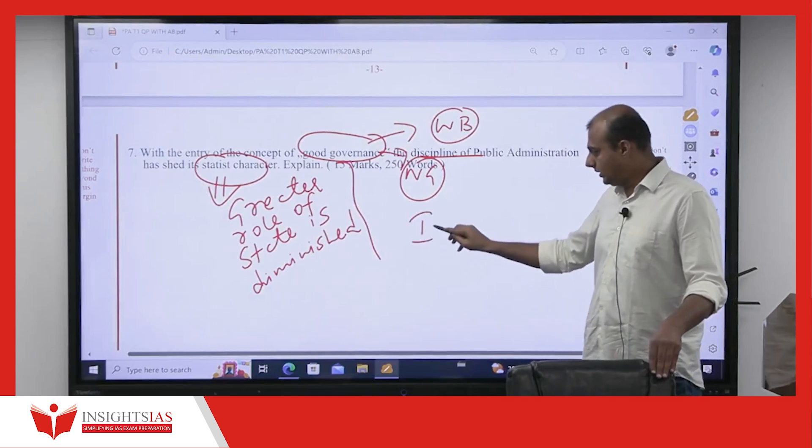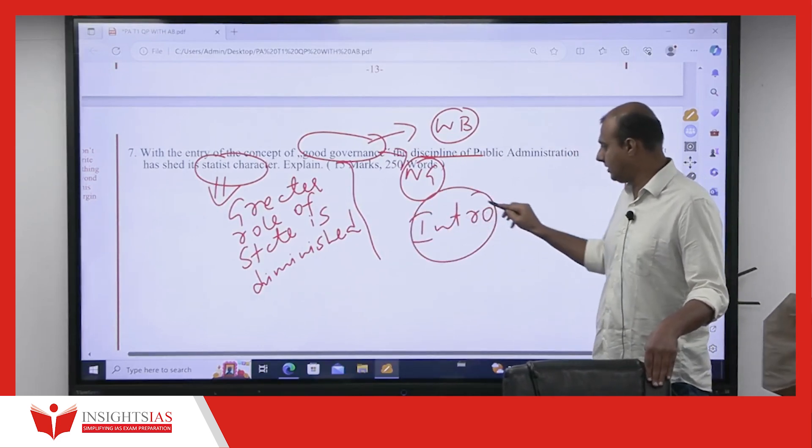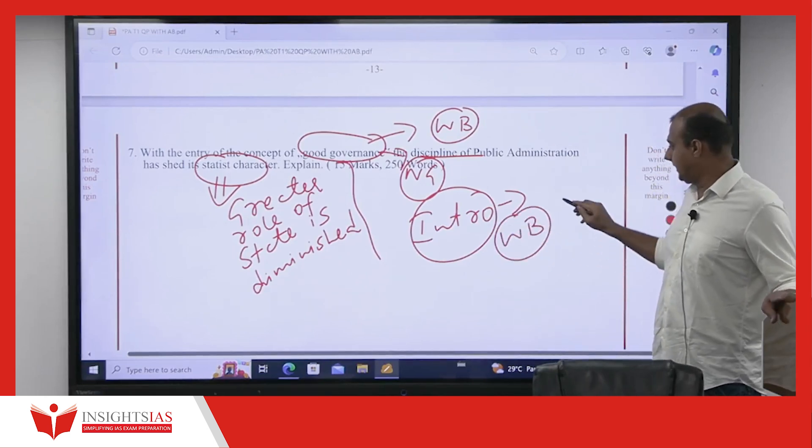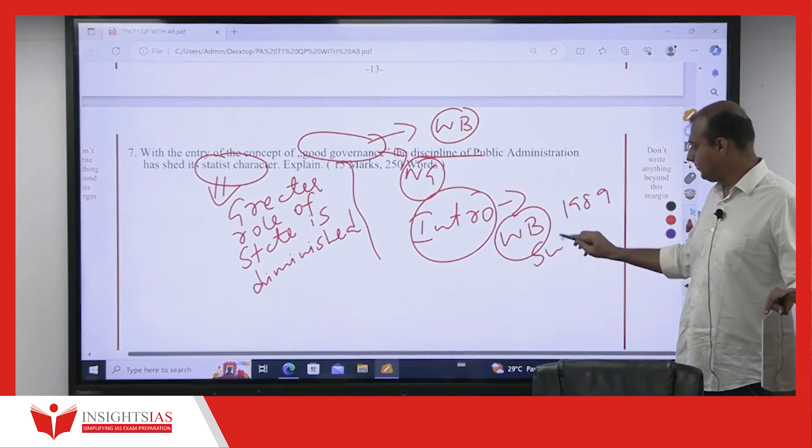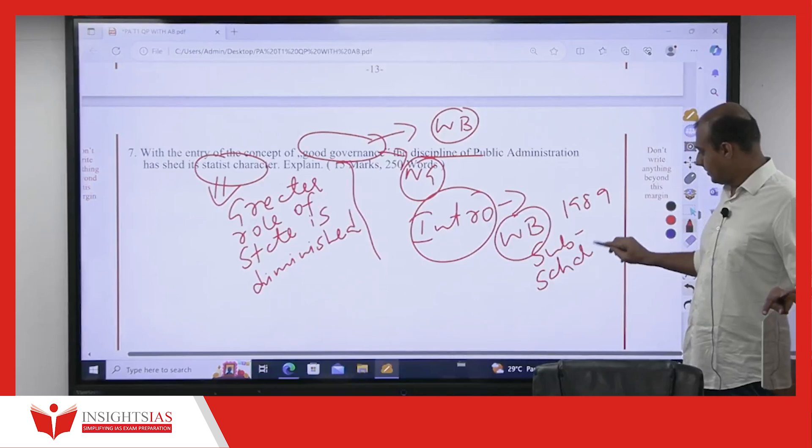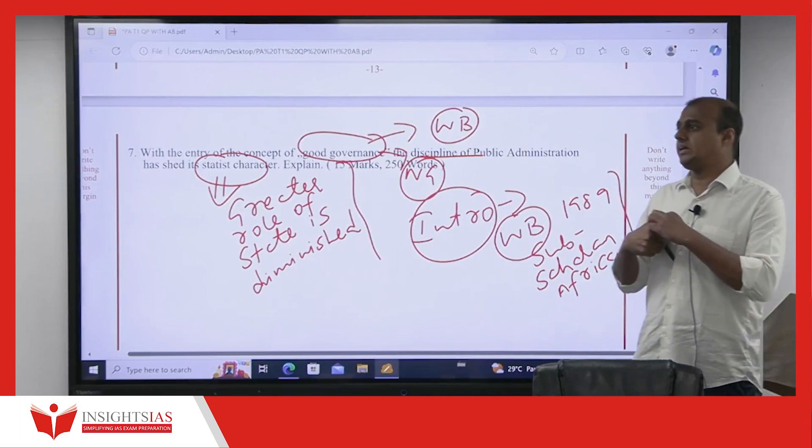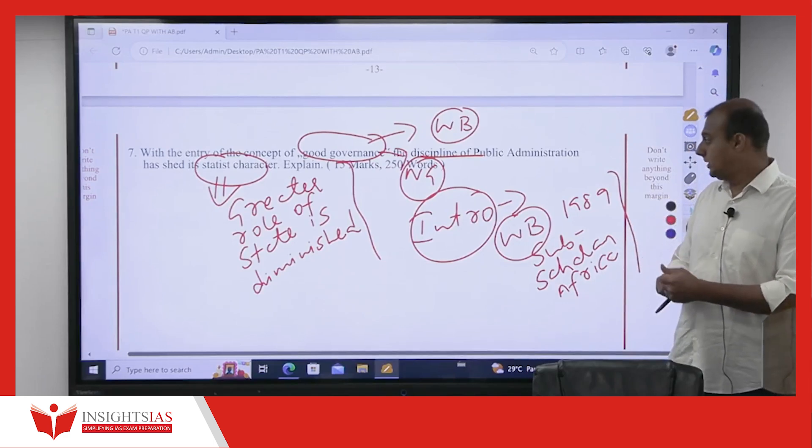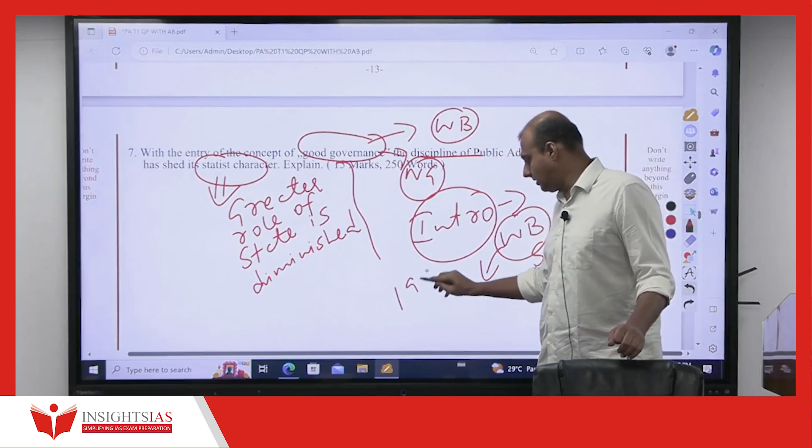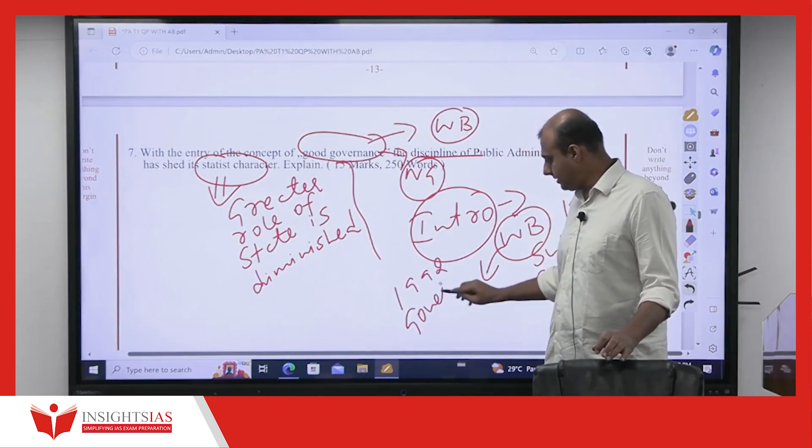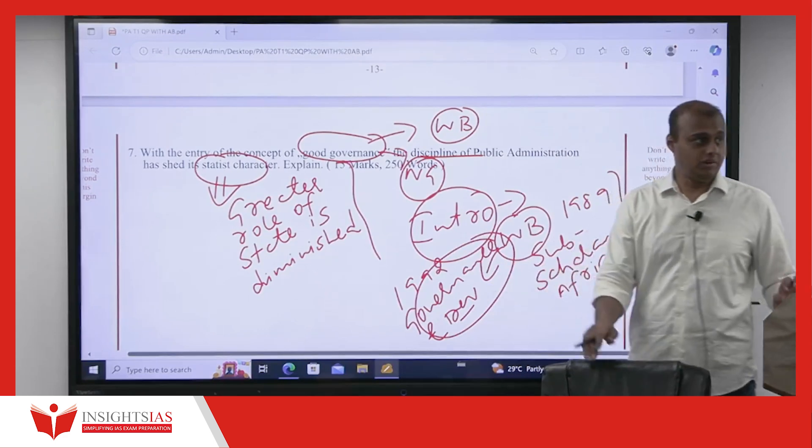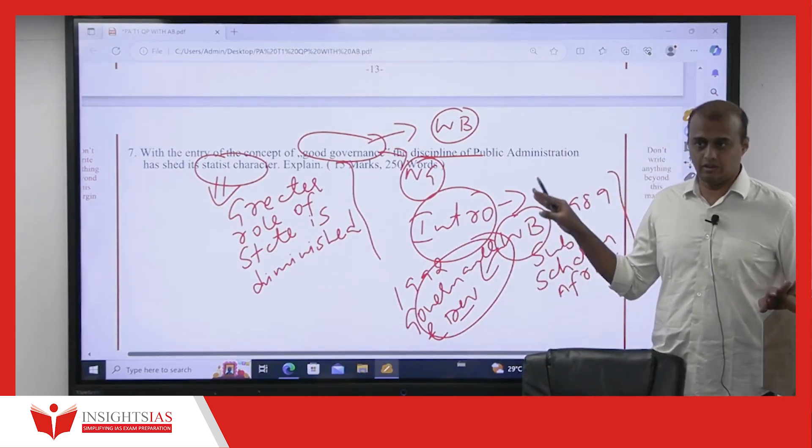How should you introduce now? Because the question clearly is telling you about good governance. In intro, what should you write about? Good governance. It evolved with, you know, World Bank's 1989 report on whom? The idea evolved. The idea of good governance was given by World Bank first in its 1989 report on Sub-Saharan Africa.